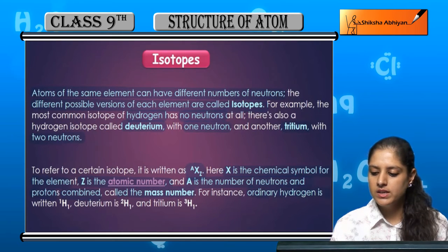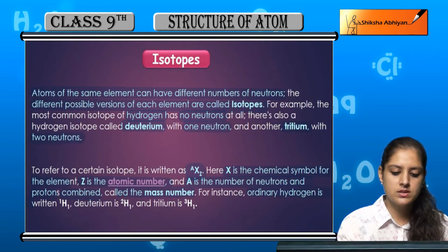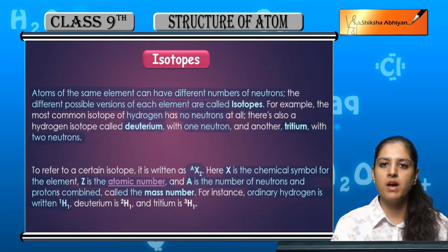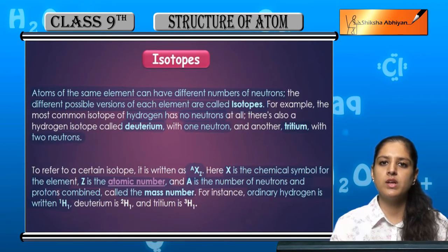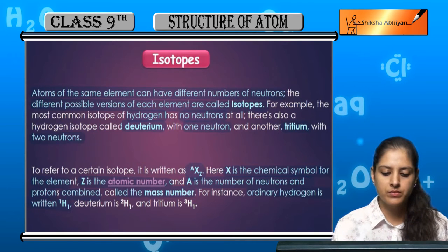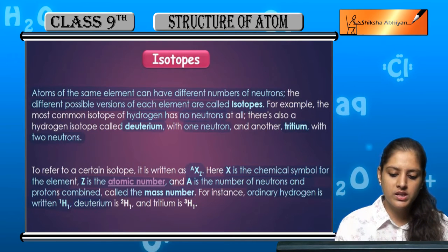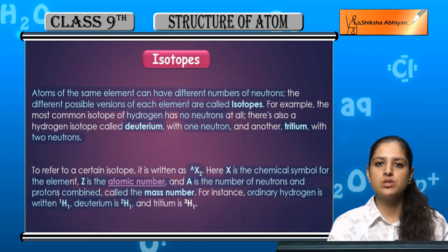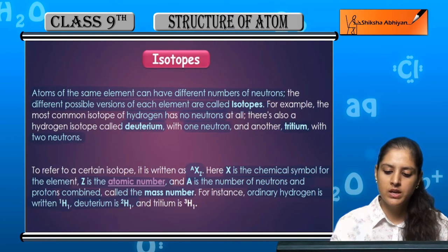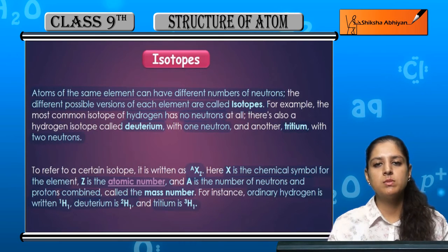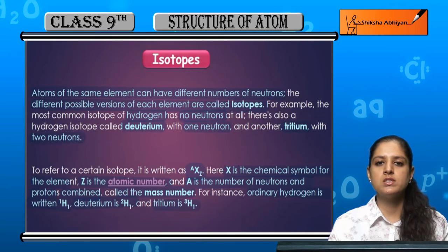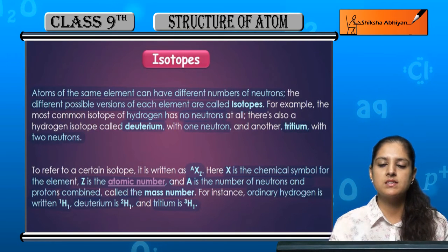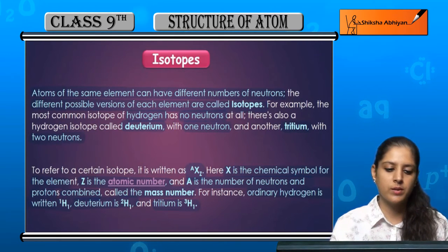For instance, ordinary hydrogen is written as 1H1 — its mass number is 1 and atomic number is 1. Deuterium is written as 2H1 because one neutron is extra, and tritium is written as 3H1 because there are two neutrons extra. So the mass number is increased.